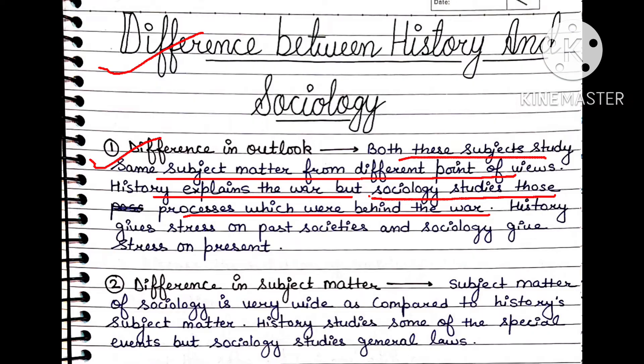The next heading is the difference between history and sociology. The first point is the difference in outlook. Both subjects have the same subject matter — human society — but their points of view are different. For example, history explains a war describing when it occurred in time, but sociology studies the process and the reason behind it. History stresses past society and sociology stresses present society.